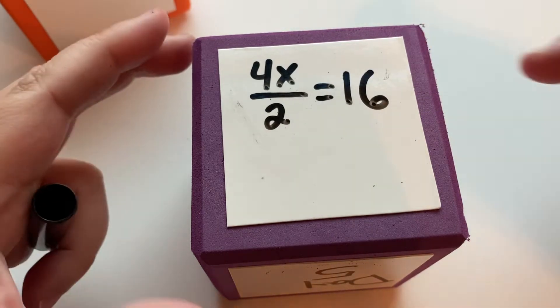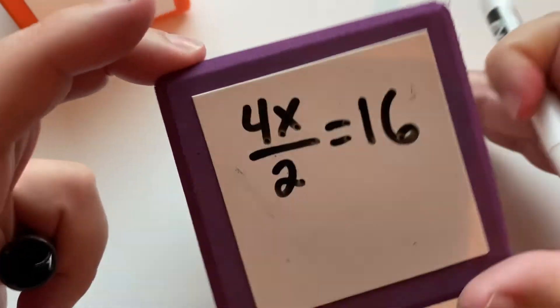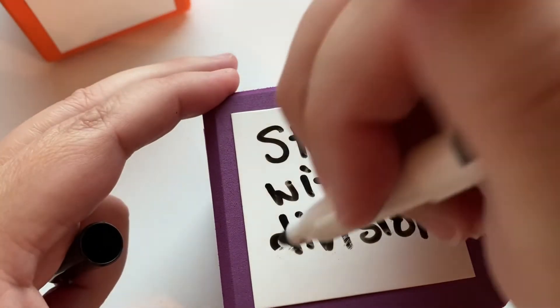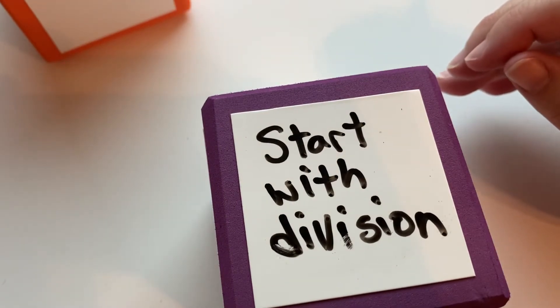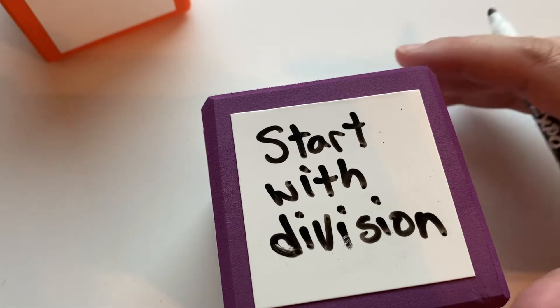And you're going to want to start with, if you guessed it, division. Because that will help us get rid of the fraction. It's a lot easier if you don't have the fraction anymore to do a simple one-step equation from there.